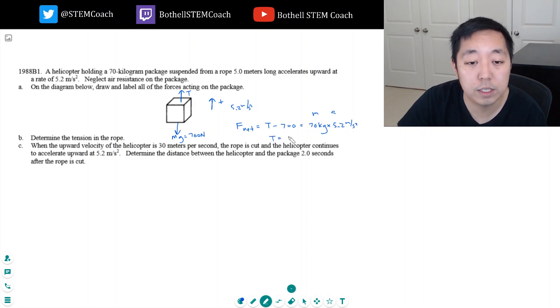So T would be 700 plus 70 times 5.2. That's 350, plus 0.2 of that is 14. 350 plus 14 is 364. 364 plus 700 is 1064 newtons. That's the tension of the rope.